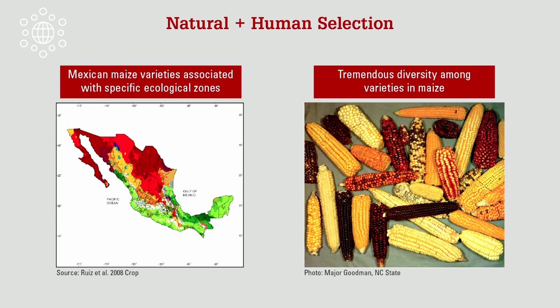There was also selection for many different kinds of ear and seed types — really human selection for ears that looked like something people wanted to keep, eat, or use for ceremonial purposes. You have a lot of variation in different colors and different types of seeds. You have popcorns and sweet corns — all of those were developed before Europeans arrived in the Americas.